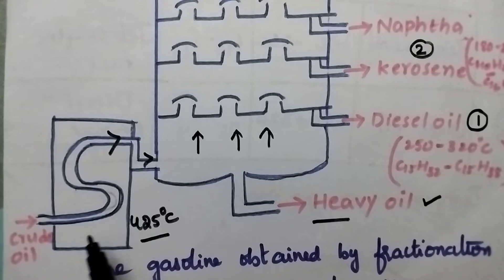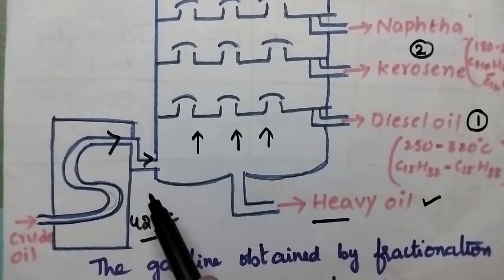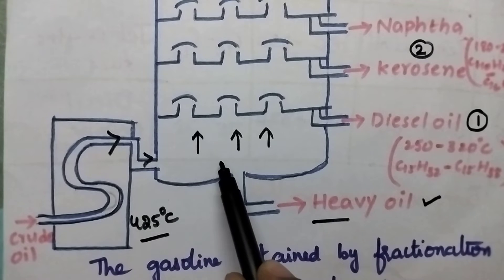In this iron retort, the crude oil is heated to very high temperature, that is 425 degrees centigrade. At this temperature, the crude oil is present in the vapor state. Now the vapors of the crude oil will be passed into the fractionating column.